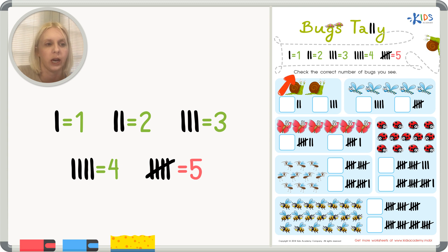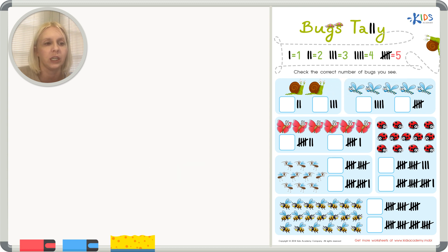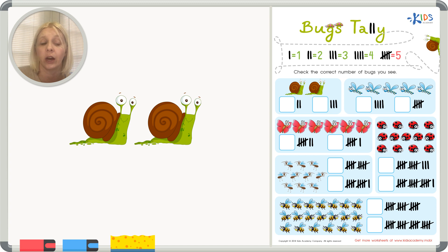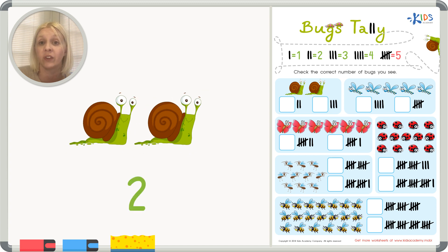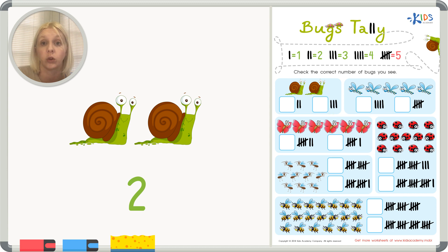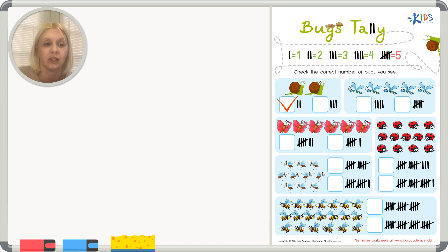Let's look at our worksheet. The directions say: check the correct number of bugs you see. I see some snails — let's count: one, two. Now let's find the correct tally marks. This one is one, two, and this one is one, two, three. The correct answer is two, because we have two snails.